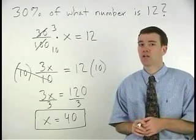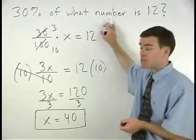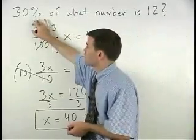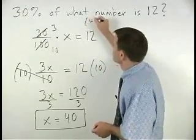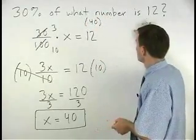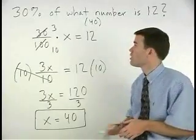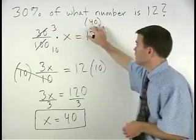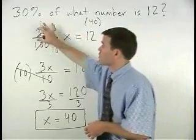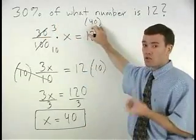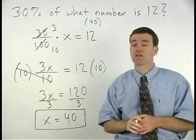Now let's check our answer back in the original problem to see if it makes sense. We have thirty percent of forty is twelve. Well we know that one hundred percent of forty would be forty. So thirty percent of forty should be a lot less than forty. So twelve seems to make sense.